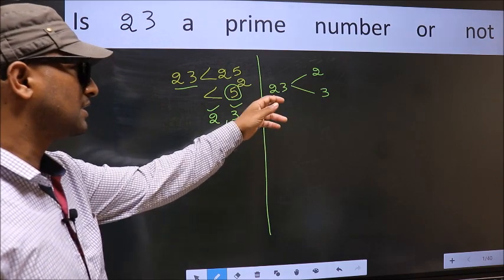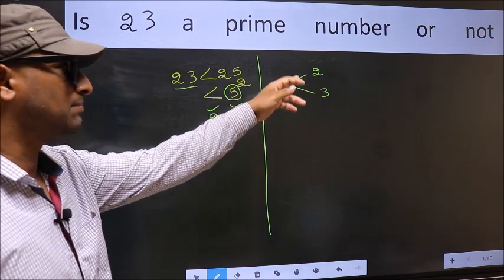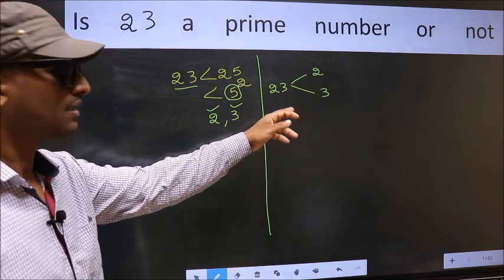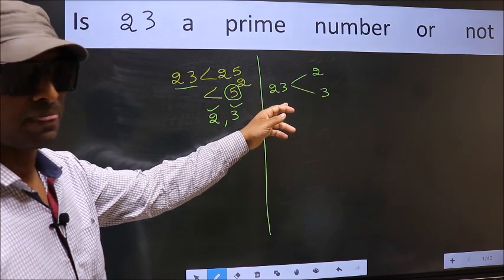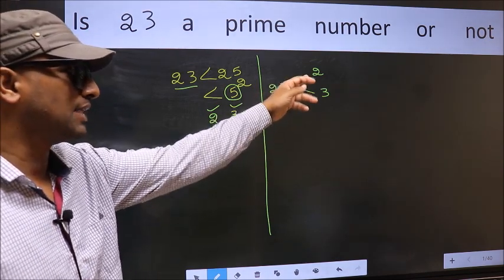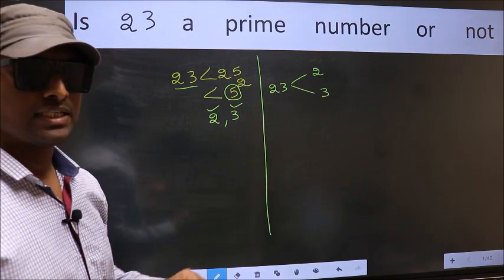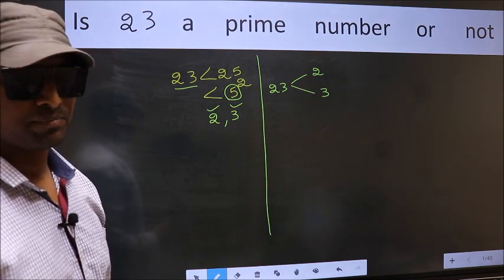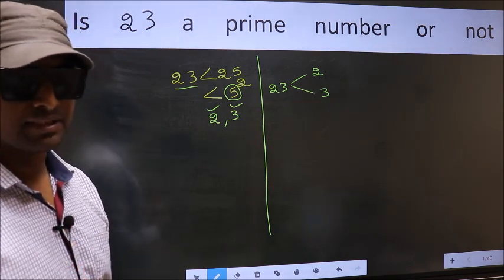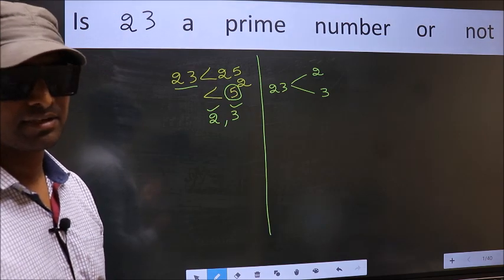If 23 is divisible by any one of the numbers, we can say 23 is not prime. If 23 is not divisible by any of these numbers, we say 23 is prime. Clear with the method. Now let us check the divisibility.